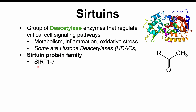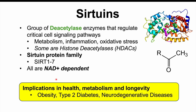In mammals, there are SIRT1 to 7 — so in humans, there are seven of them. All are NAD+ dependent, which will be important when we talk about supplements to activate these sirtuins. Research demonstrates that activation of these sirtuins has important implications in health, metabolism, and longevity, especially in conditions like obesity, type 2 diabetes, and neurodegenerative diseases like Alzheimer's and Parkinson's disease.